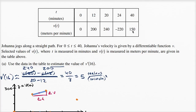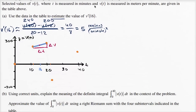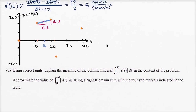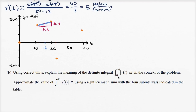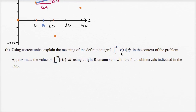She has a positive velocity, then a negative velocity, then a positive velocity again. If you take the absolute value — if you just care about the magnitude of the velocity — we're talking about speed. But we're not just talking about the absolute value of velocity; we're integrating the absolute value of velocity over time from zero to 40. If you integrate speed, for every little amount of time dt, she has some speed — that gives you the distance she travels.